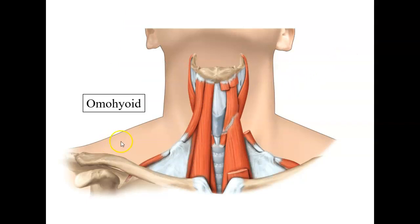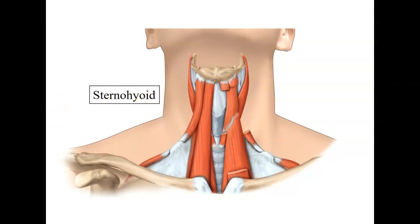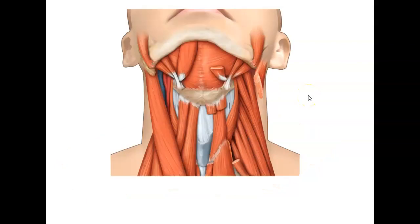A couple more pictures show a clearer view of the omohyoid. It comes down from the hyoid, extends down, and attaches to the scapula — again, it depresses the hyoid bone. Then a different picture shows the sternohyoid, connecting the hyoid bone to the sternum. As is our usual practice, stop the video and practice each of the muscles you've learned in this tutorial. Thank you for watching, and I'll see you in the next tutorial.